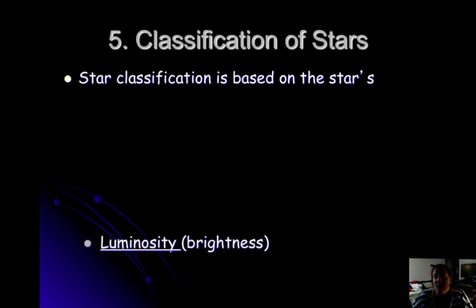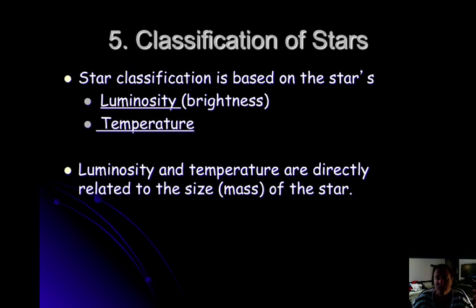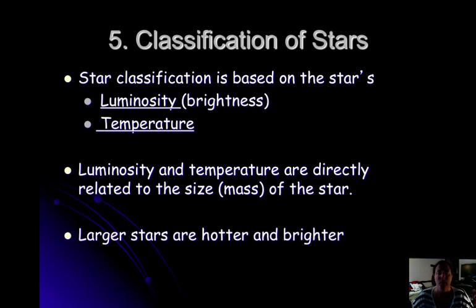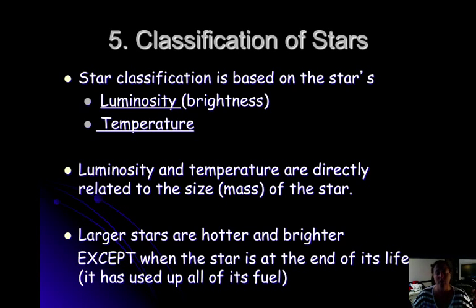We classify stars mostly on luminosity, which is how bright a star is, and its temperature. These two are directly related based on the size or mass of the star. Large stars tend to be hotter and brighter. The only time this is not true is when the star is at the end of its life — it uses up all its fuel and might expand out before it ends up dying and losing its energy.